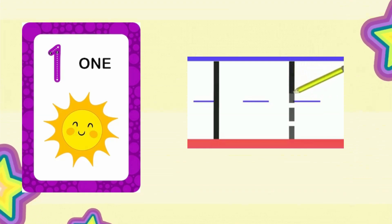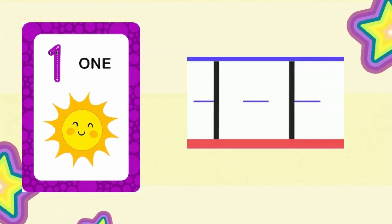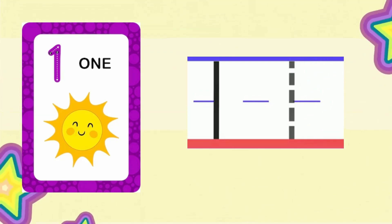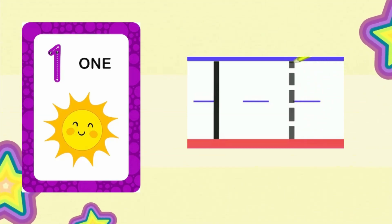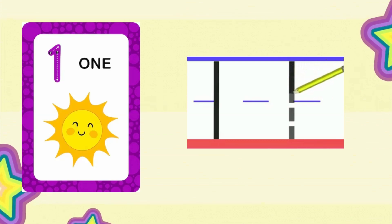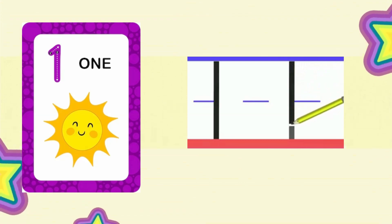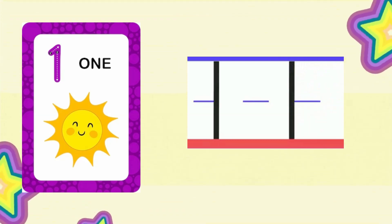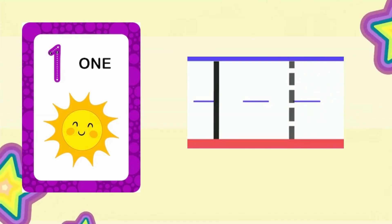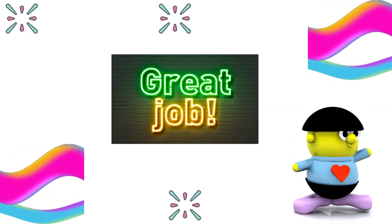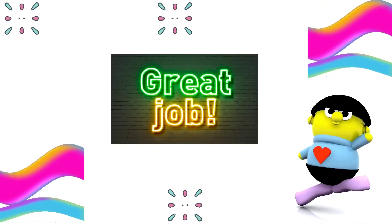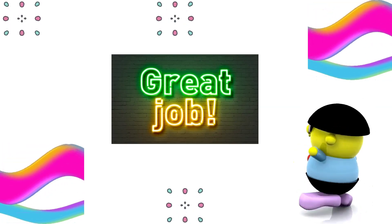To write number 1, we will start at the top and put a straight line down. Great job, let's move to the next number.